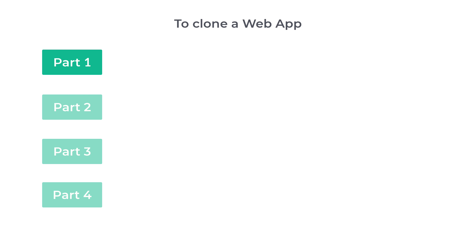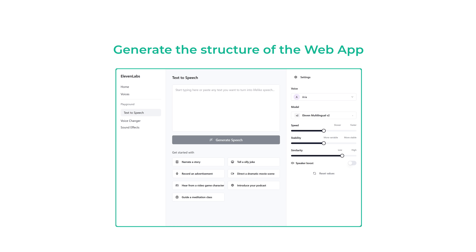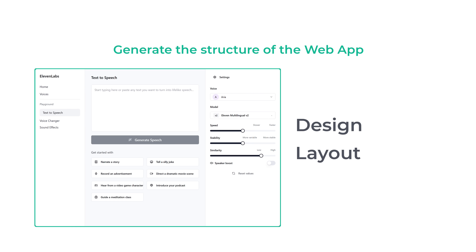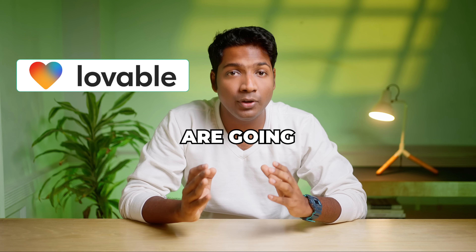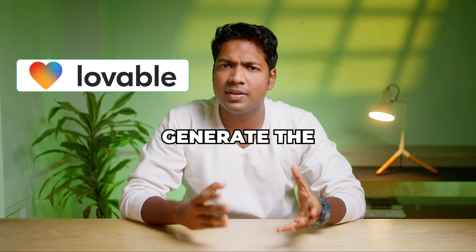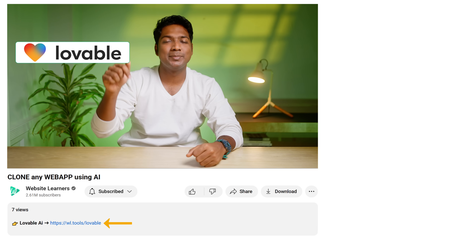To clone a web app, we are going to do four parts. The first part is to generate the structure for the web app — the complete structure including its design and layout. To do that, we are going to do three steps. The first step is to create an account on Lovable, the AI tool we are going to use to generate the web app. Just click the link in the description.